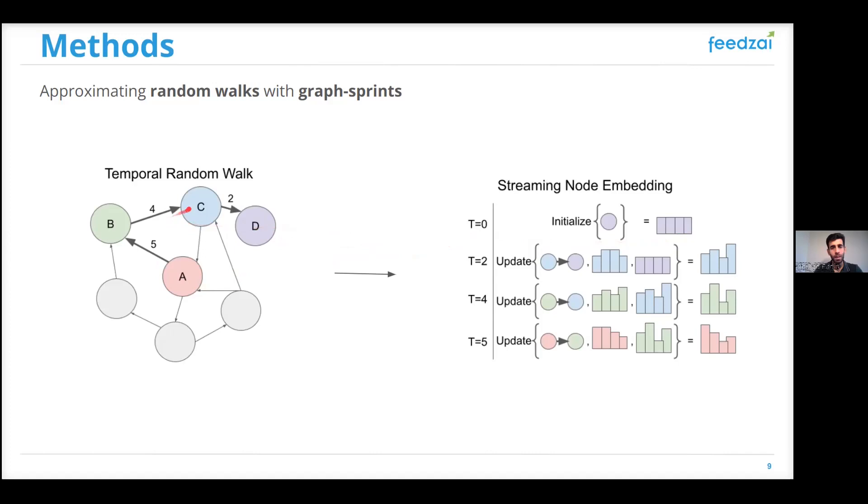we can generate an embedding for node C using the features of this edge and looking only at the embedding of its direct neighbor with which it shared the edge, which is D in this case. And then at timestamp 4, when node B arrives,